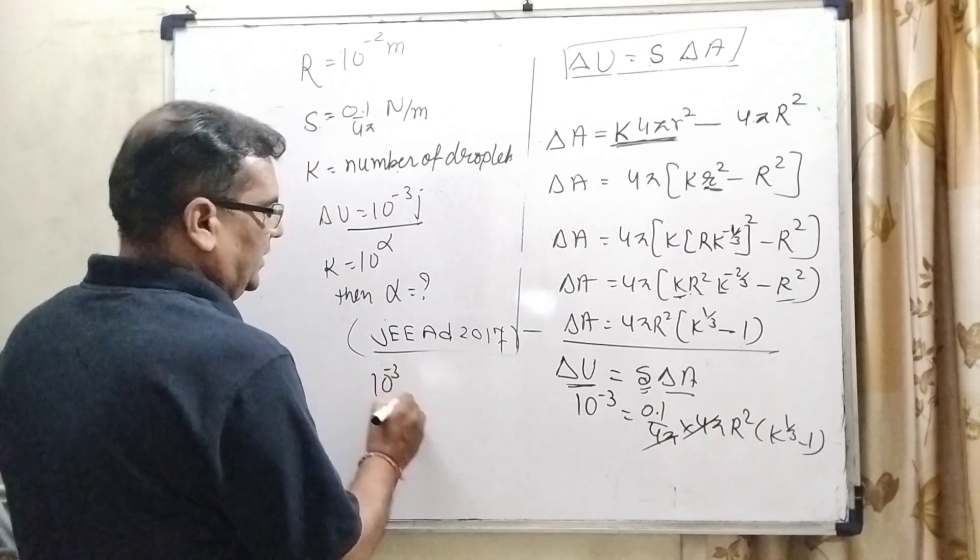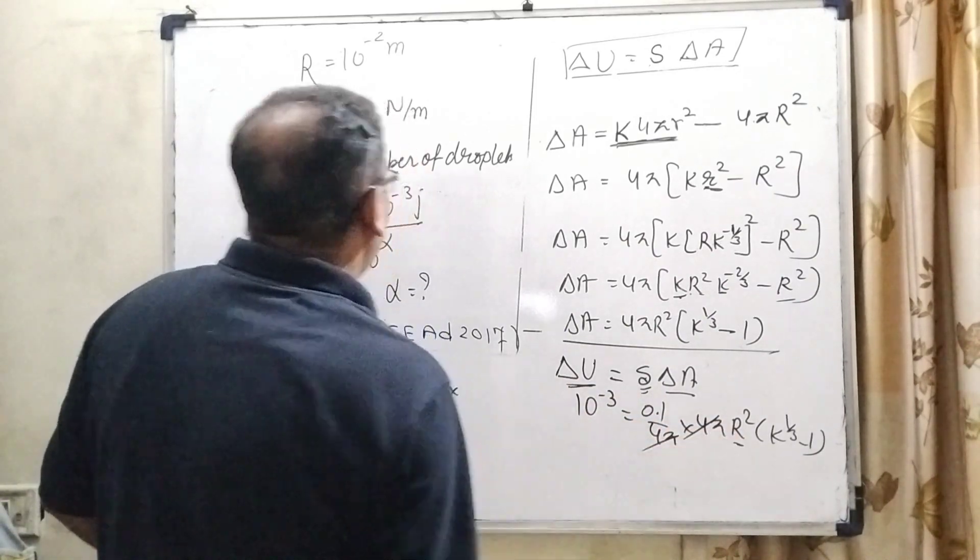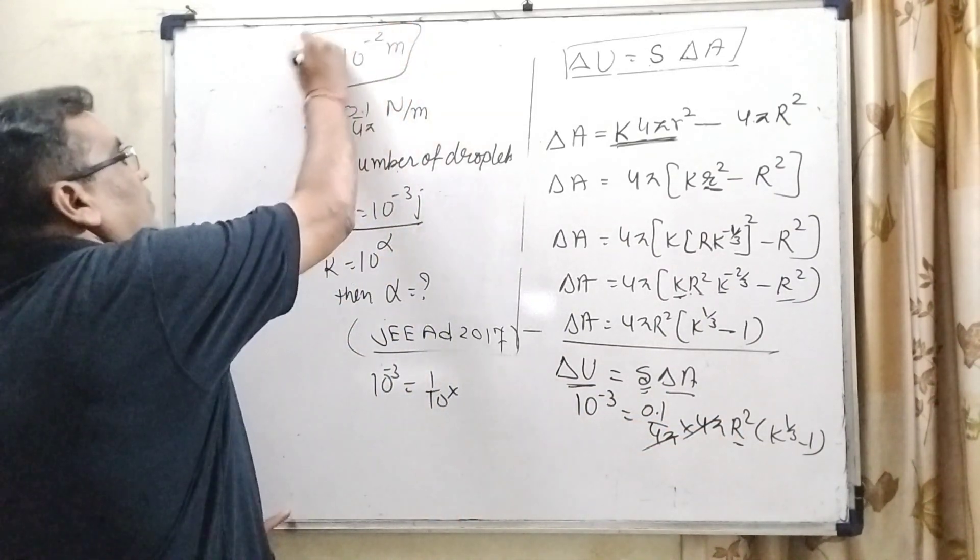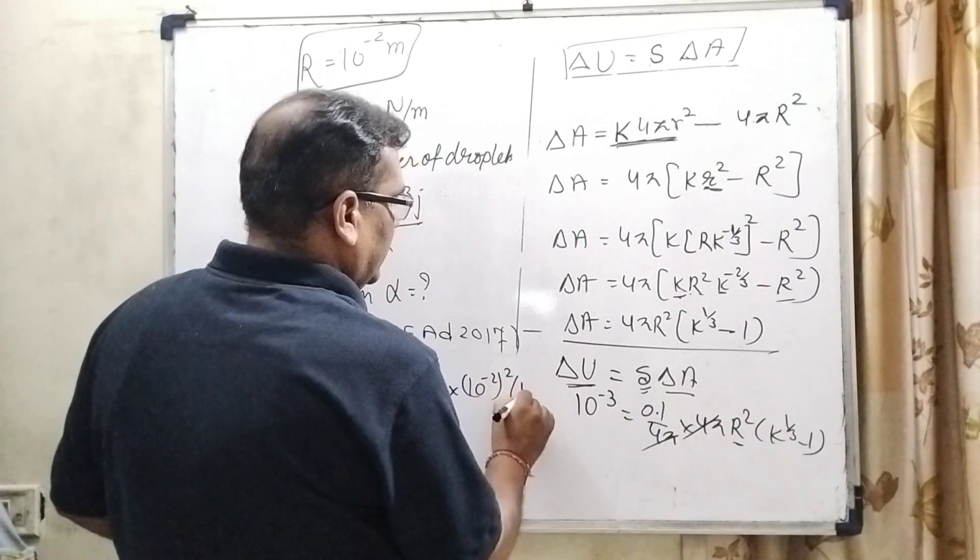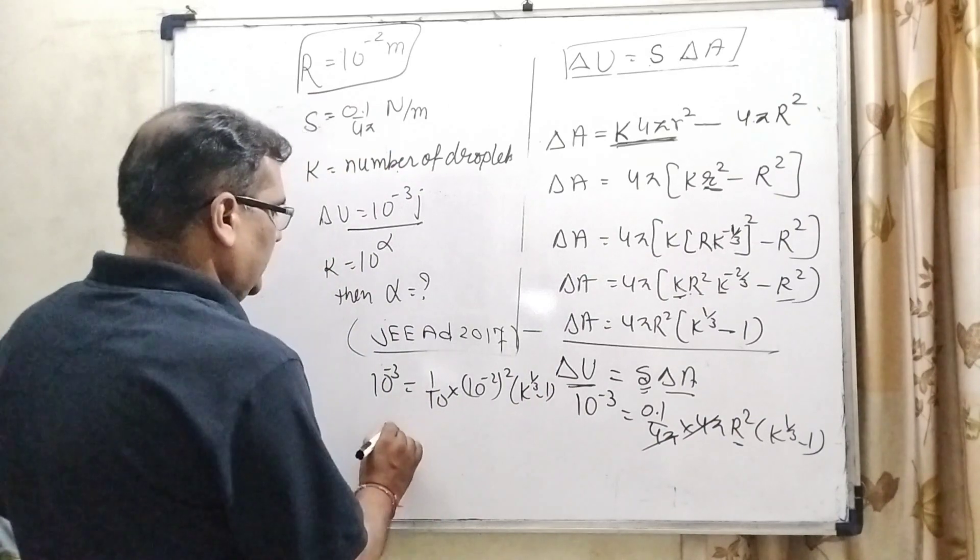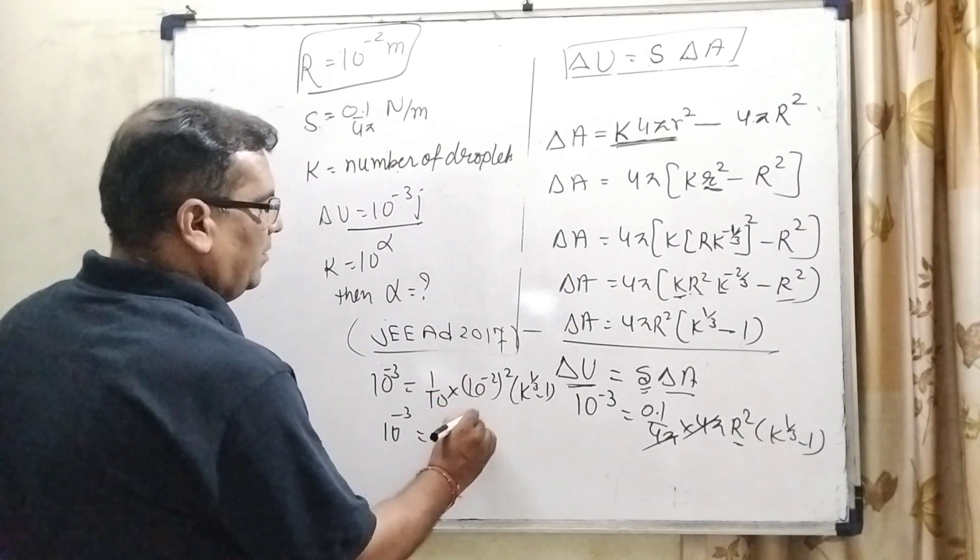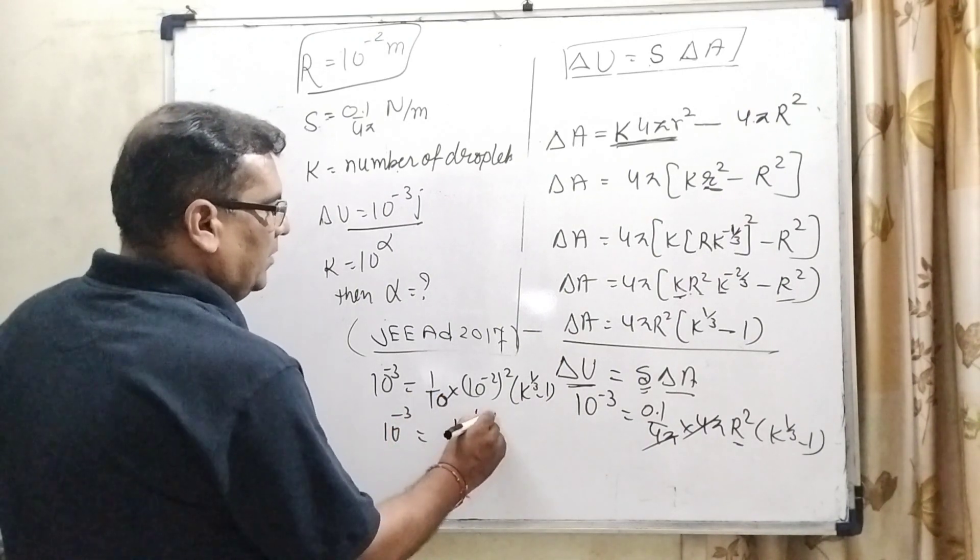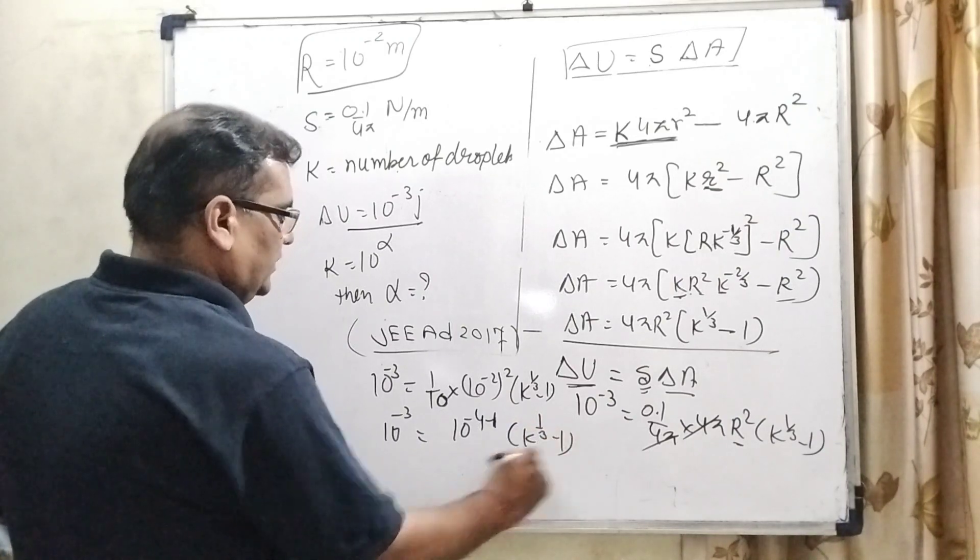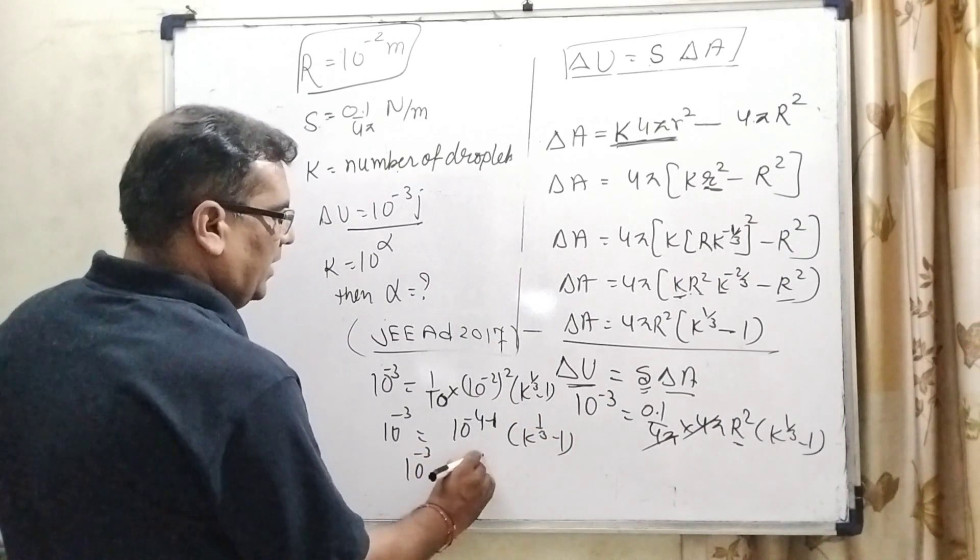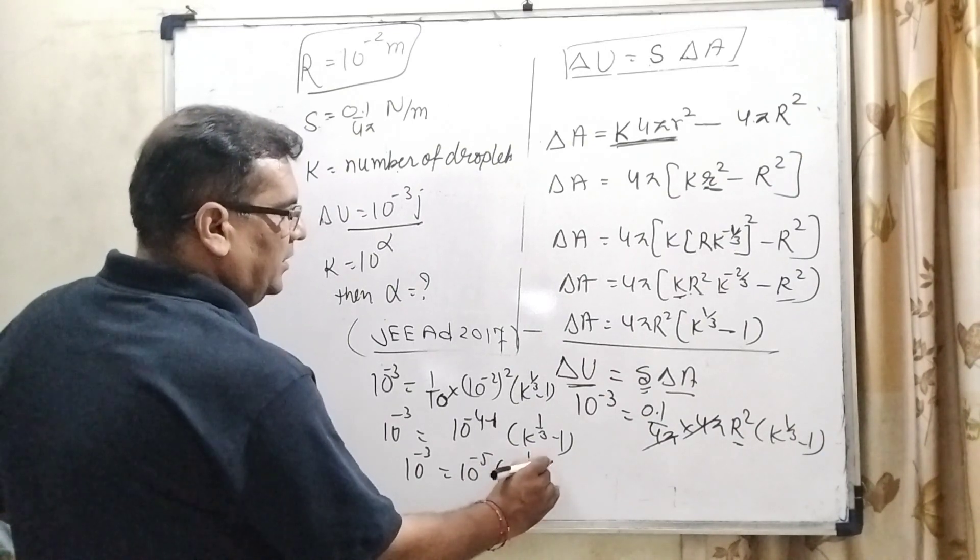10 raised to power minus 3. 0.1 can be written as 1 by 10. And what is the value of big droplets radius? 10 raised to power minus 2 whole square and k raised to power 1 by 3 minus 1. Then 10 raised to power minus 3, now it becomes 10 raised to power minus 4 and this 10 become minus 1, k raised to power 1 by 3 minus 1. 10 raised to power minus 3 equal to 10 raised to power minus 5 and k raised to power 1 by 3 minus 1.